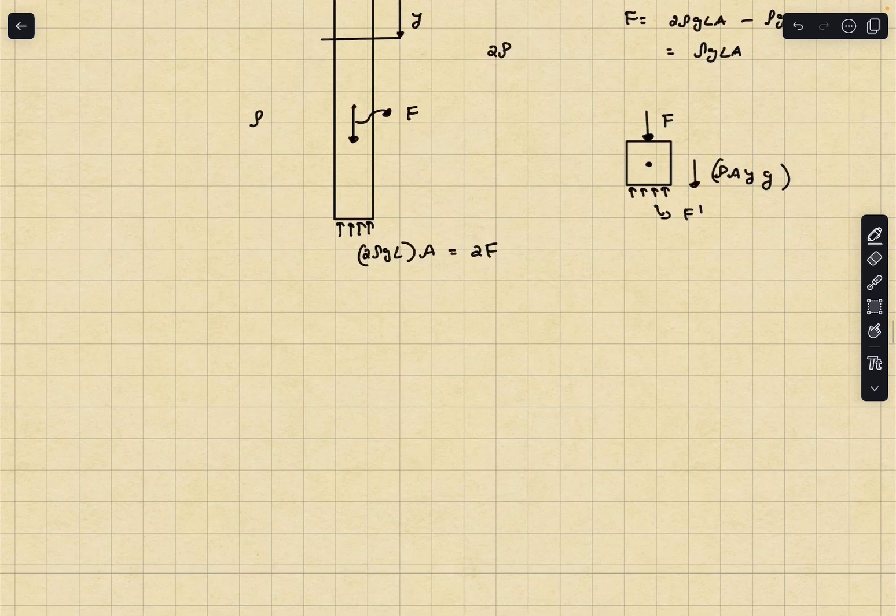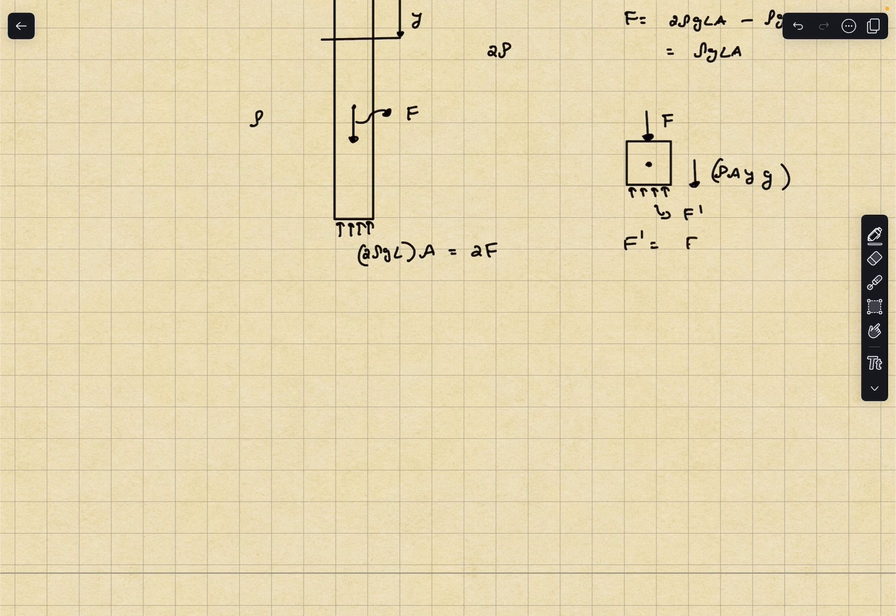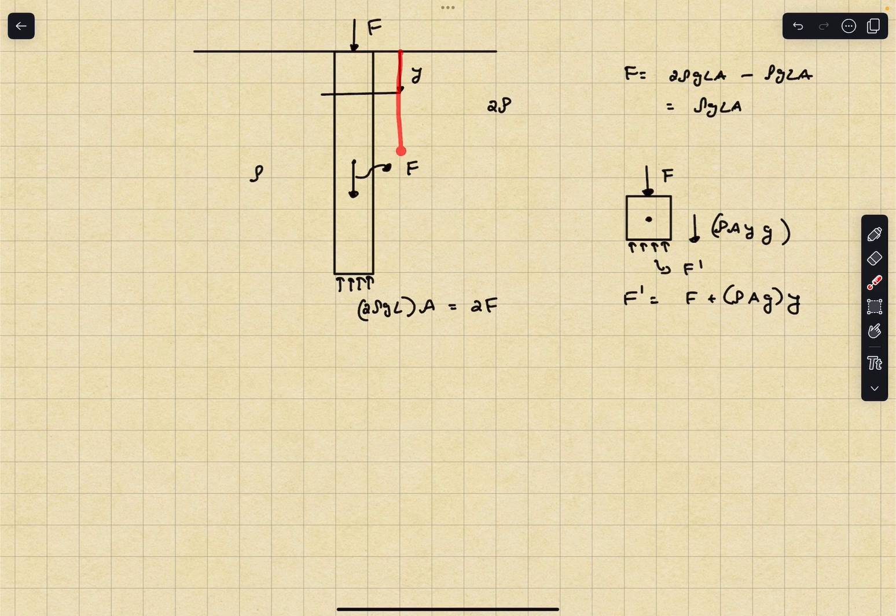Let's say I section the rod at some point that is at a distance of y from the free surface of the fluid and let's say I observe the FBD of this part. Obviously we'll have the force F, then we'll have the internal compressive forces due to the other part of the rod and let's call this force as F dash, and then we'll also have the weight of this part.